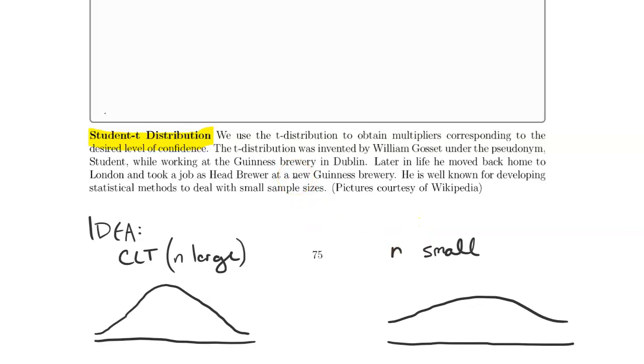As an interesting piece of trivia, the t-distribution was developed when William Gossett was working at the Guinness brewery in Dublin because he was doing some statistical inference involving the beer.